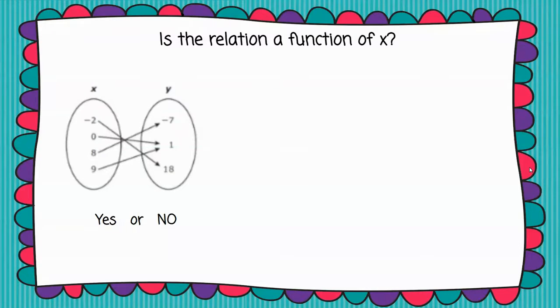In this video we will determine whether a relation is a function and we're going to look at relations in four different ways. The first way I have here is a mapping, and a general rule of thumb is that a relation is a function if the x values do not repeat.